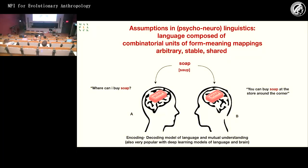There are a lot of assumptions in psycholinguistics, neurolinguistics, and linguistics that language is composed of combinatorial units of form-meaning mappings that are arbitrary, stable, and shared across speakers, and that these form-meaning mappings are homogeneous. These models are also assumed in large language models and how they are encoded and decoded in the brain, and they have become more and more common.